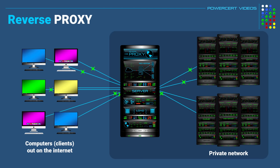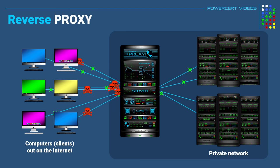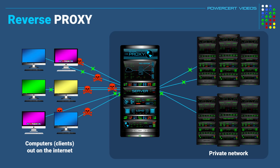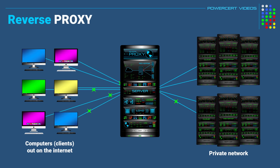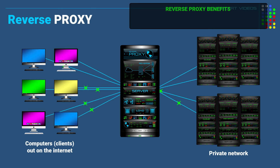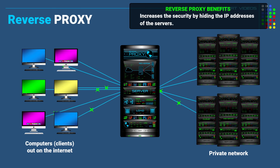Now when computers from the internet want to access data on these servers, they no longer directly communicate with the servers — they only communicate with the reverse proxy server. Then the reverse proxy will fetch the data from the server and direct it back to the computer. A reverse proxy increases the security on a private network, and one of the ways it does this is by hiding the IP addresses of the servers.